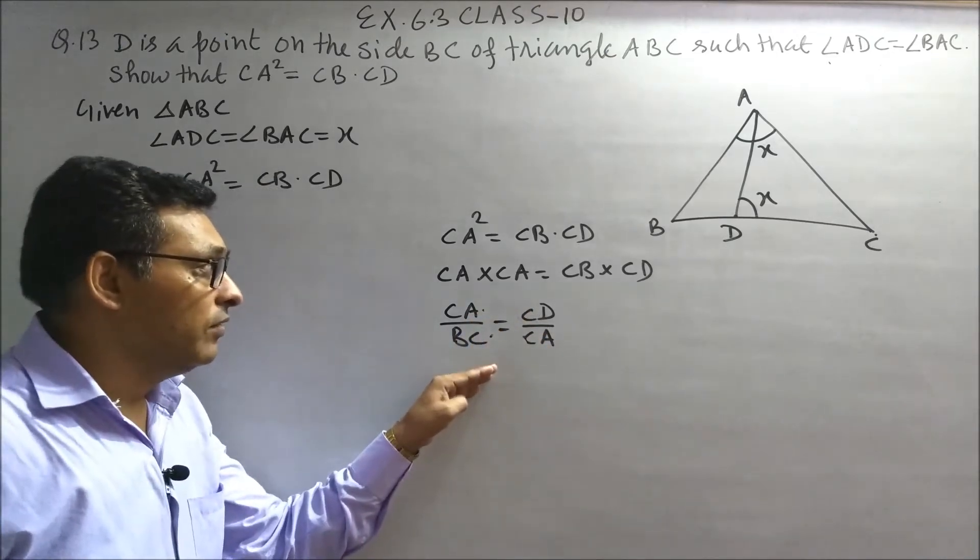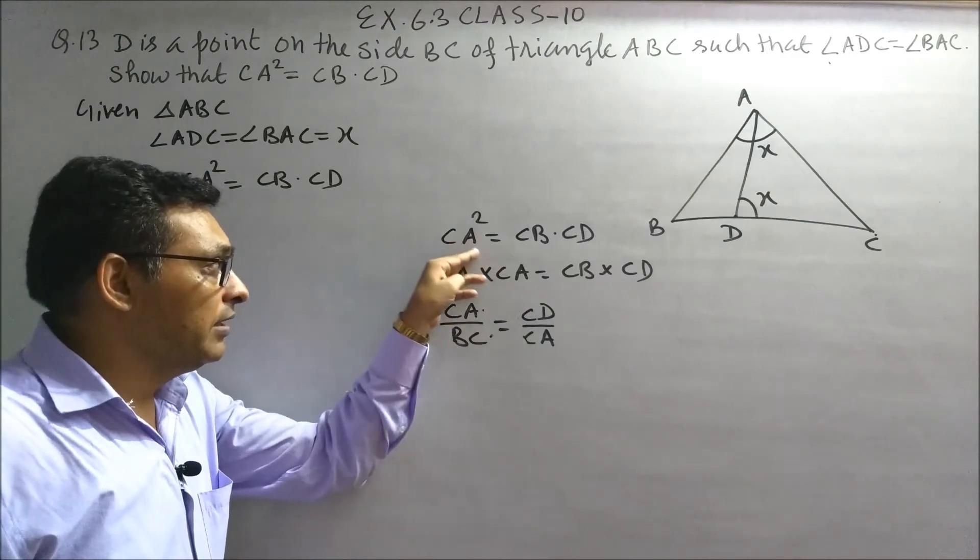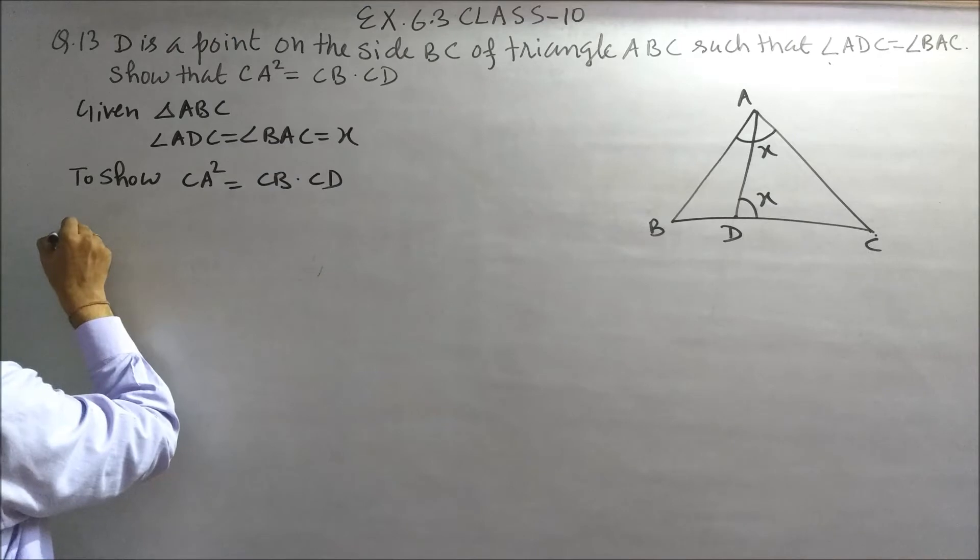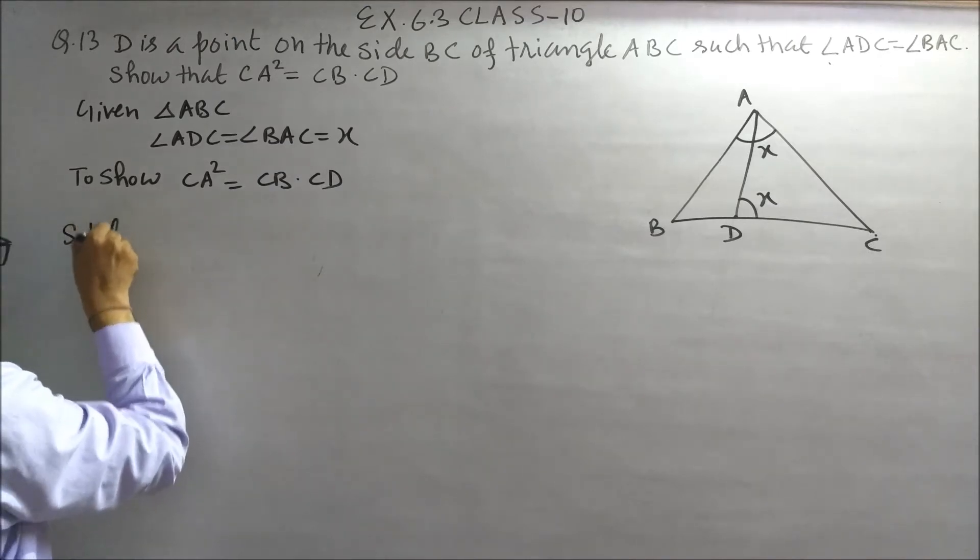Then we can easily prove that CA square is equal to CB into CD. Let's begin the solution.